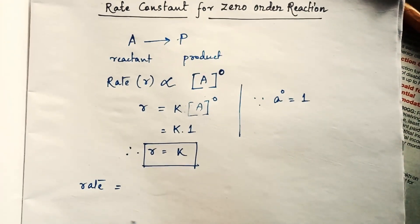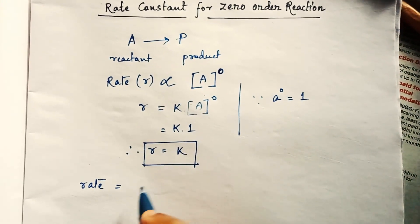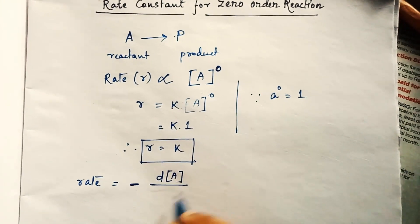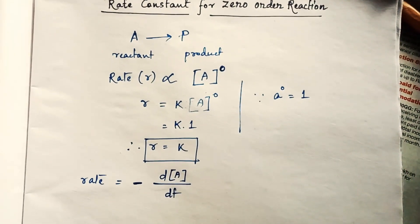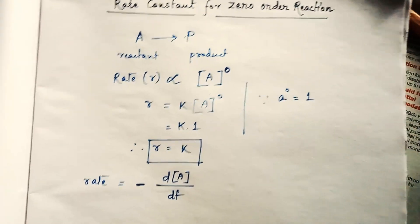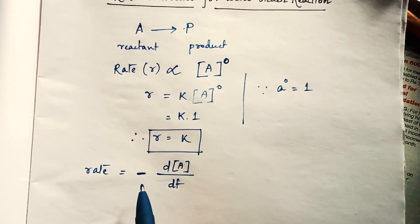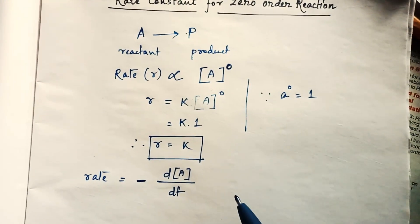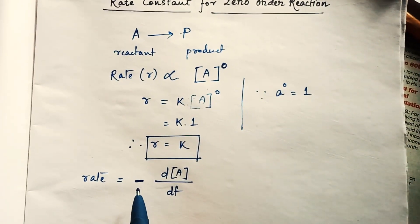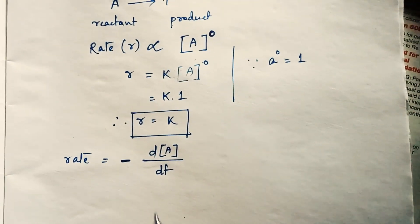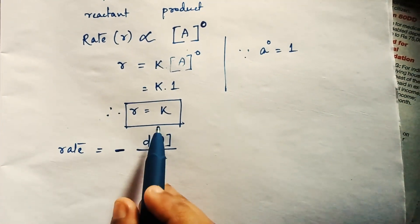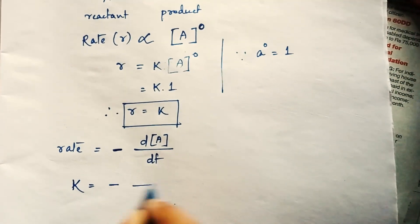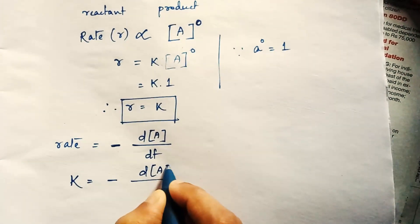We can also express the rate of this reaction in terms of the derivative of the concentration of reactant A with respect to time dt. Notice the minus sign — this is because the reactant concentration is decreasing with time. Since rate equals k, we can write: k = -d[A]/dt.